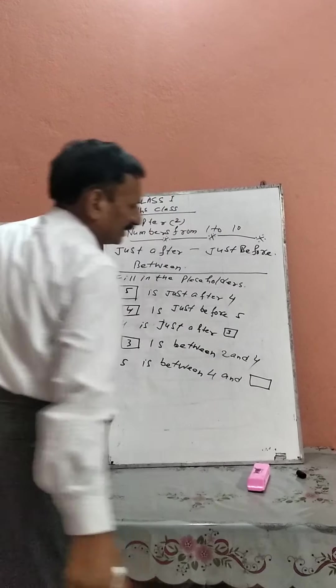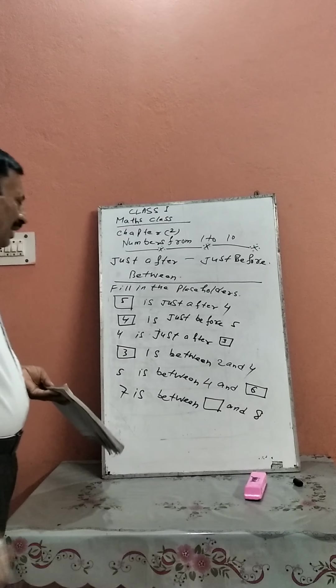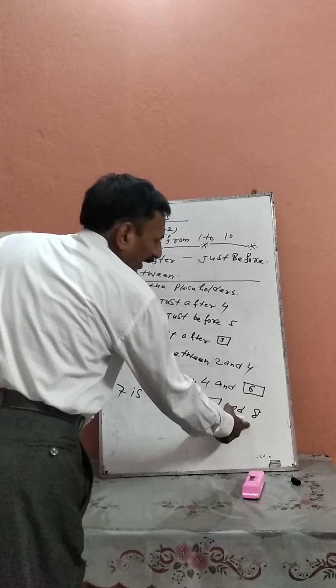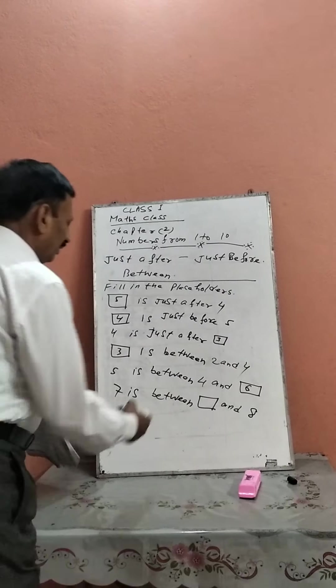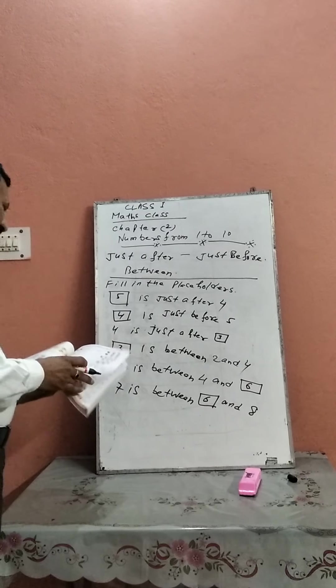7 is between dash and 8. 7 aata hai kiske aur 8 ke beech mein? — between 6 and 8.